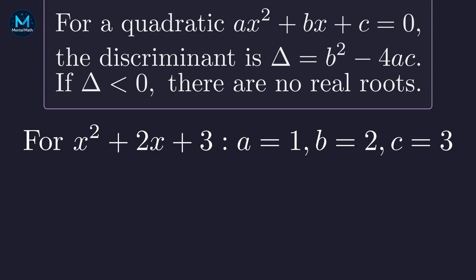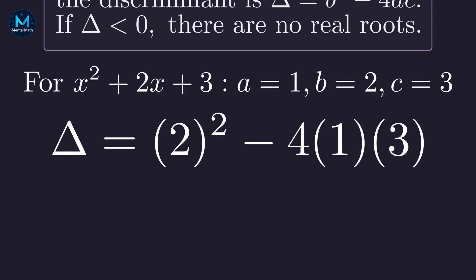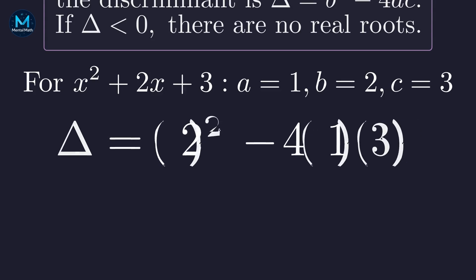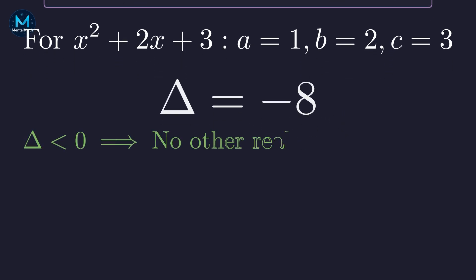In our quadratic, a is 1, b is 2, and c is 3. Plugging these values into the discriminant formula, we get 4 minus 12, which equals negative 8. A negative discriminant means the quadratic has no real roots, only complex ones. X equals 2 is our only real solution.